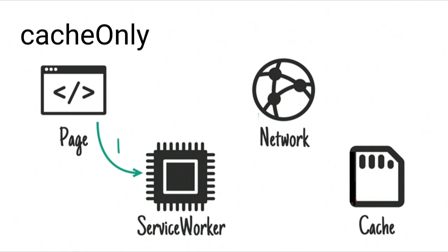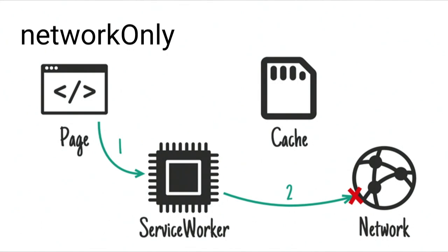Cache-only is slightly less useful but handy for the stuff that you've pre-cached. A request comes in, we go to the cache, and if it fails, that's it — it never tries the network. This is useful if you've pre-cached something or have some other way of updating the cache, and you want to say 'don't even try the network, I only want to show cached stuff.' Network-only is the flip — only go to the network, and if it fails, it fails. This is basically like not having a behavior set for a particular route, but if you've set a default, this can allow you to override it to get back to that original default behavior.